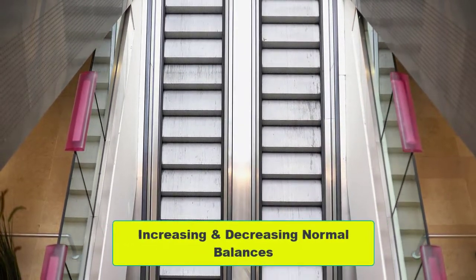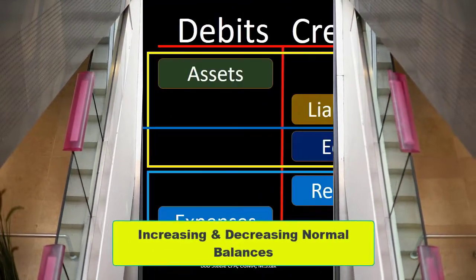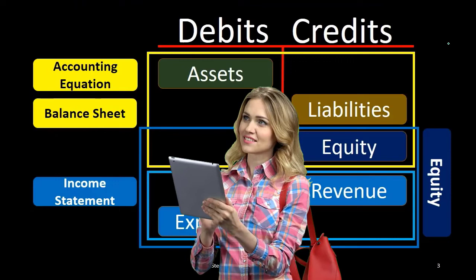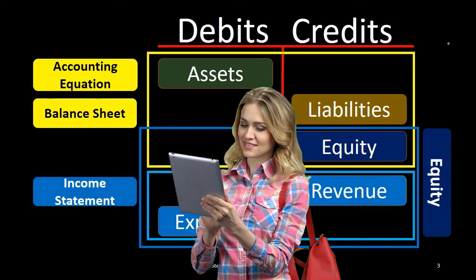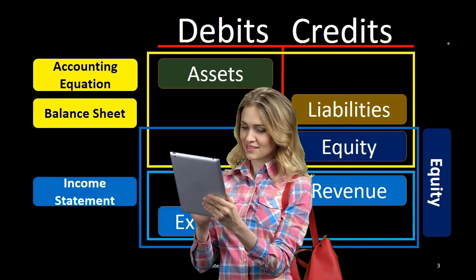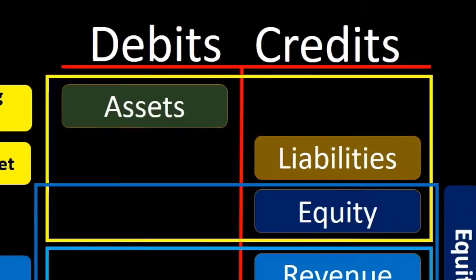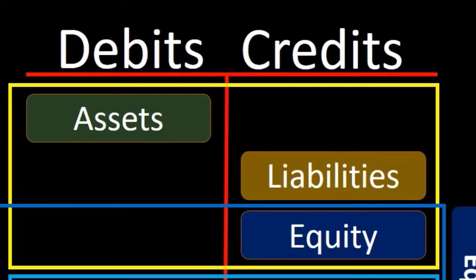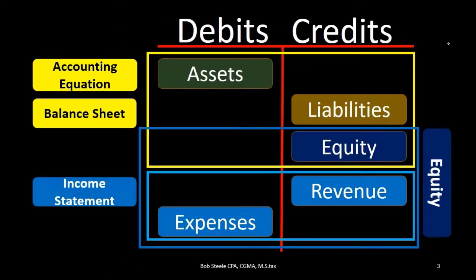We do that with the tools of debits and credits, with the tools of journal entries. Once we know the normal balance, it's really easy to apply the rule. Therefore, have this cheat sheet in front of you and/or have the normal balances memorized. Go back to the prior presentation and make sure we get an idea of the normal balances.